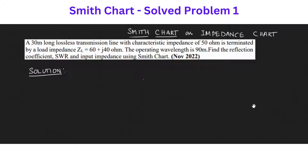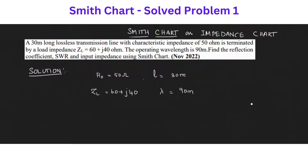We will see how to solve this problem. A 30-meter long lossless transmission line with characteristic impedance R0 is given as 50 ohms. Length of the transmission line is 30 meters and load impedance ZL is given as 60 plus j40. Operating wavelength lambda is given as 90 meters. We have to find the reflection coefficient K, SWR standing wave ratio, and input impedance on the Smith chart.